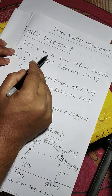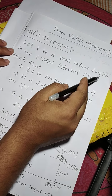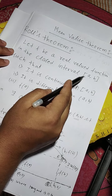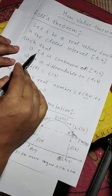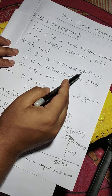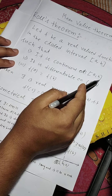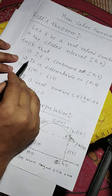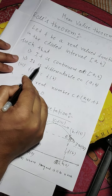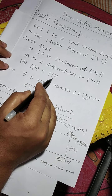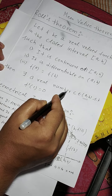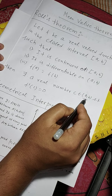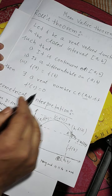Let f be a real valued function on the closed interval [a, b] such that: f(x) is continuous on the closed interval [a, b]; f(x) is differentiable on the open interval (a, b); and the third condition is f(a) equals f(b). Then there exists a real number c in the open interval (a, b) such that f'(c) equals 0.